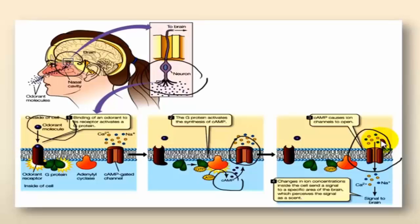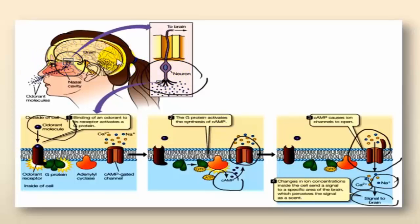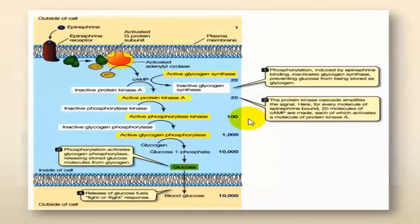When the ion channels open, they allow ions — sodium and calcium — to diffuse along the concentration gradient, resulting in the formation of an electrical signal that will travel from this neuron in the roof of the nasal cavity to the part of the brain involved in interpreting olfactory signals.